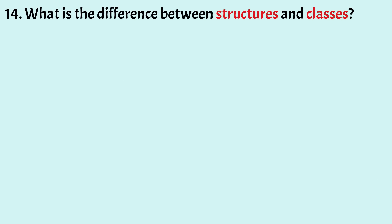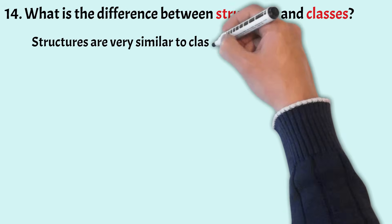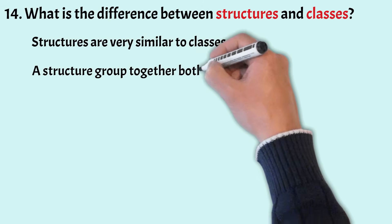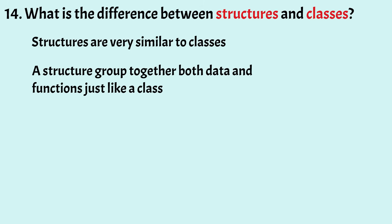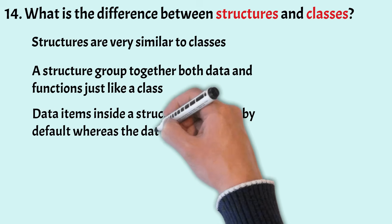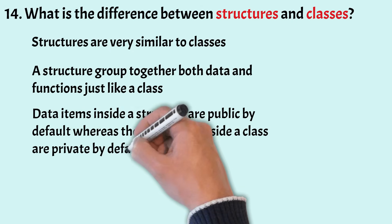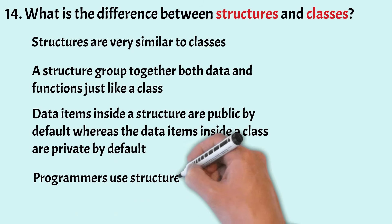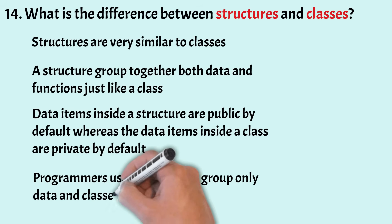Now let us understand what is the difference between structures and classes. Structures are very similar to classes since a structure can also contain functions inside it, and it groups together both data and functions just like a class. The only difference between them is that the data items inside a structure are public by default, whereas the data items inside a class are private by default. However, in most situations, programmers use structures to group only data and classes to group both data and functions.